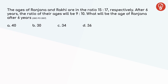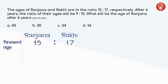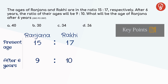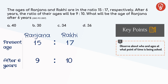In this question, Ranjana and Rakhi's present age ratio is 15:17 and their ages after 6 years is 9:10. To apply the shortcut, it's important to observe who is being asked about and at what point in time. In this question, we are asked to find Ranjana's age and her age after 6 years.